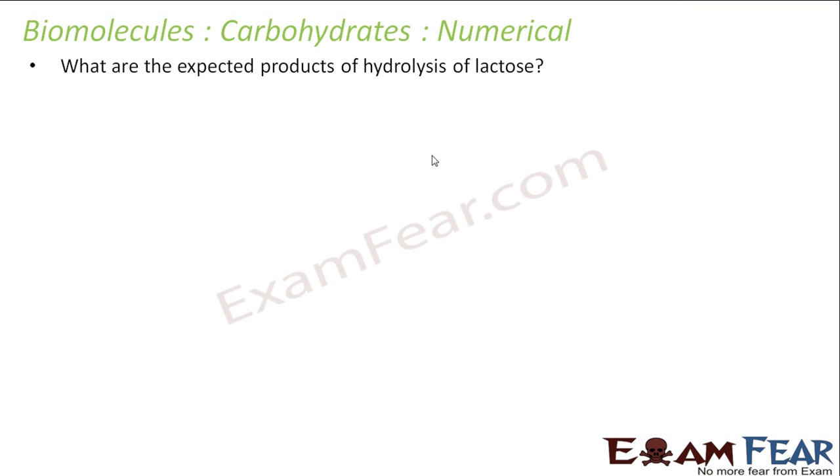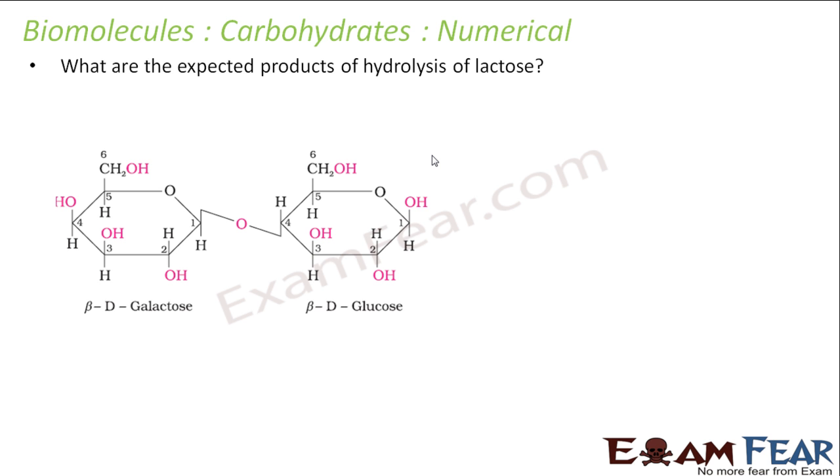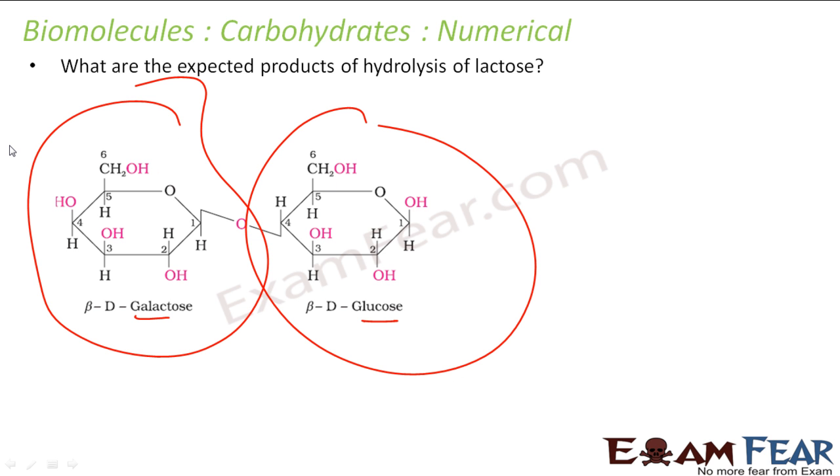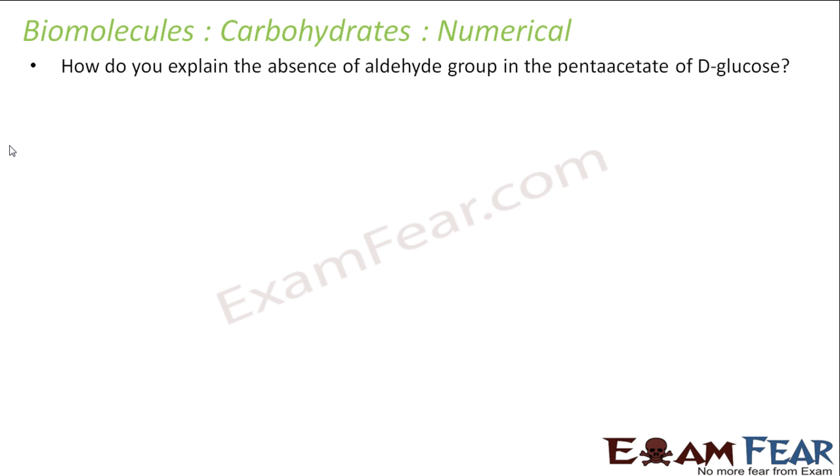Let's take another example. The question is: what are the expected products of hydrolysis of lactose? Lactose is made by galactose and glucose with a glycosidic bond. Obviously, if you do hydrolysis you'll get beta-D-glucose and beta-D-galactose. Pretty easy question.